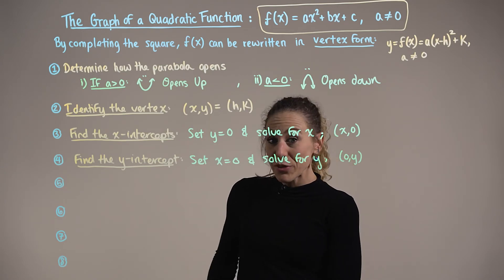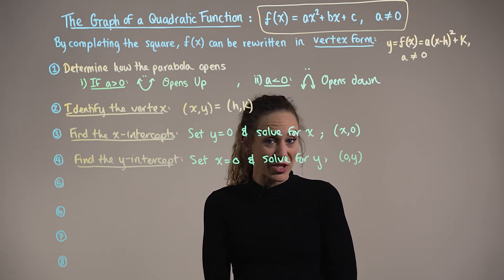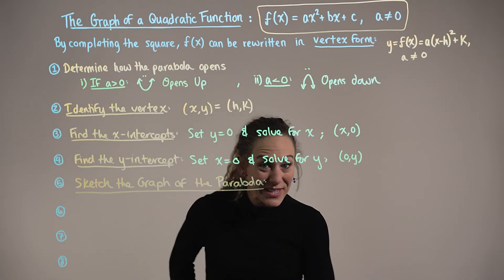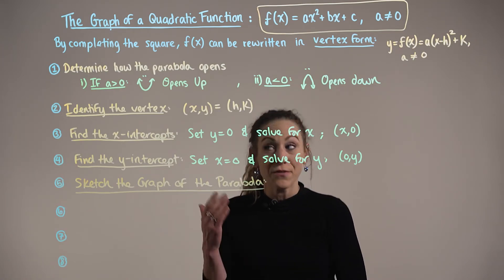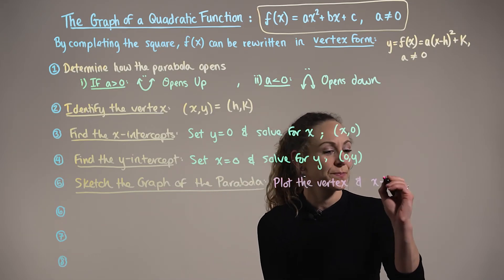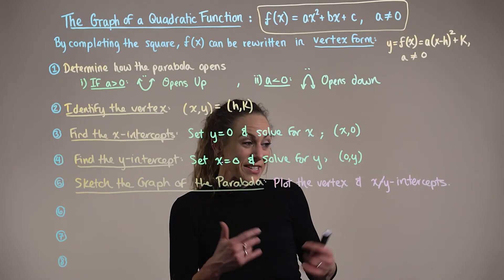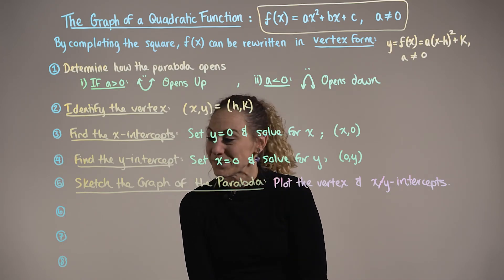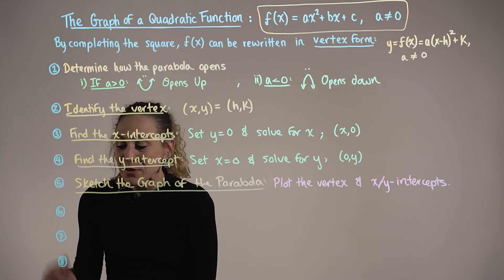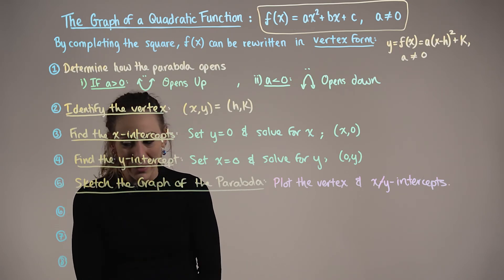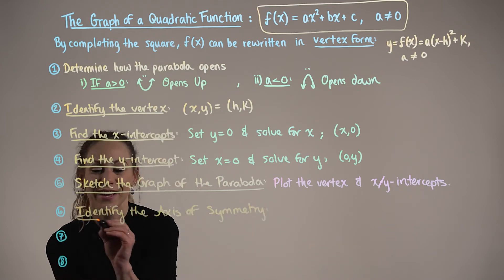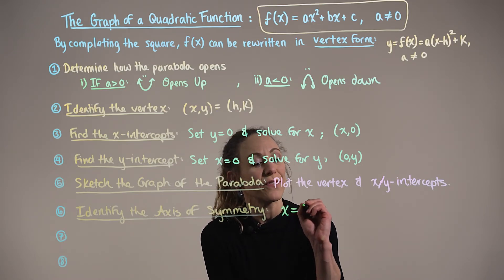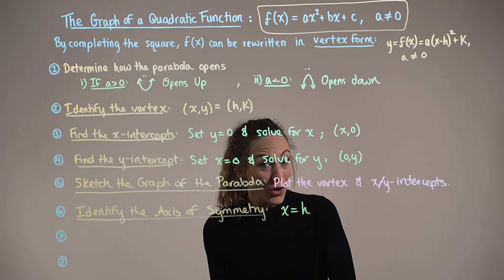Steps one through four establish what we need to sketch the graph; the following steps are based on our sketch. Step five: begin sketching by plotting the vertex and intercepts. If this isn't enough information, create a table of x and y values for additional points. Step six: identify the axis of symmetry, which is the vertical line defined by the x-coordinate of the vertex, x = h.